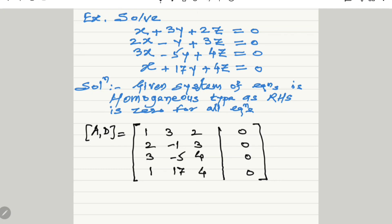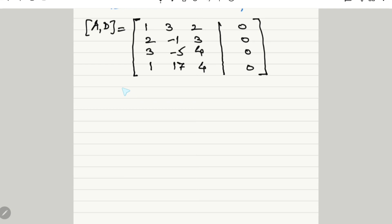As discussed in my previous videos, we have to convert this matrix to its canonical form — meaning we convert the principal diagonal elements to non-zero and all lower diagonal elements to zero. The leftmost element is 1, which is non-zero. Using this pivot, we convert the remaining elements in that column to zero using row transformations: R2 minus 2·R1, R3 minus 3·R1, and R4 minus R1, all in a single step.